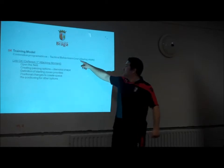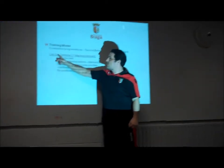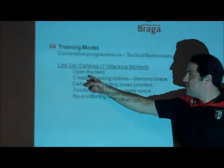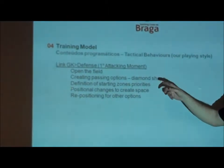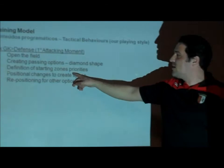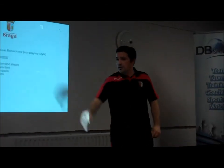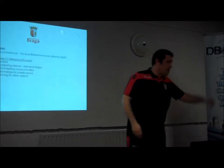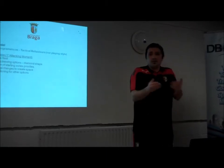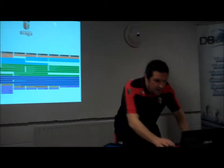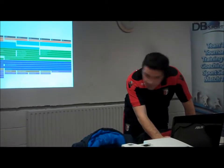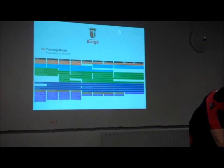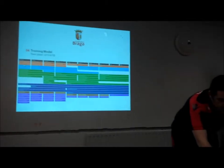That was technical behaviors. This is tactical behaviors — the way we play. For example, linking the goalkeeper to defense: the main priority is to open the field, which means where they should be positioned, creating passing options. We also define starting zones and priority. So we tell them: if possible, play the ball to the center back; if not possible, play there — but you always decide according to what you see. Here in orange you have the 'way we play' definition. The first row is our offensive priorities, the second row defensive priorities.